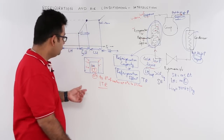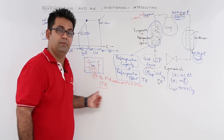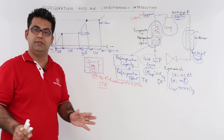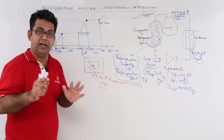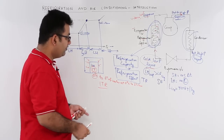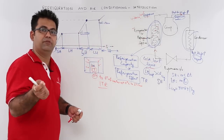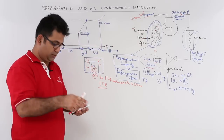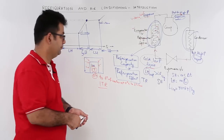The phase change has taken place but we are not talking about temperature change, so we are talking about latent heat. To have a numerical value of 1 TR in terms of kilo joule per minute or kilowatts, we will use the latent heat.